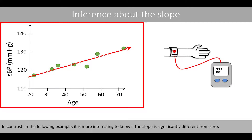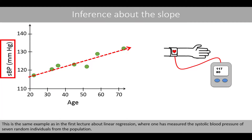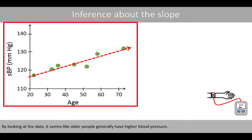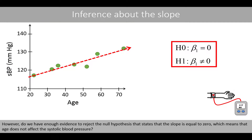In contrast, in the following example it is more interesting to know if the slope is significantly different from 0. This is the same example as in the first lecture about linear regression, where Manash measured the systolic blood pressure of seven random individuals from the population. The aim of the study is to see if age affects the systolic blood pressure. By looking at the data, it seems like older people generally had a higher blood pressure. However, do we have enough evidence to reject a null hypothesis that states that the slope is equal to 0, which means that age does not affect the systolic blood pressure?